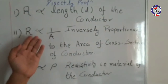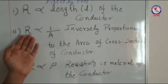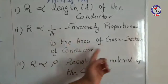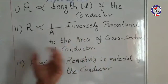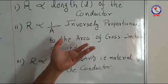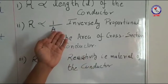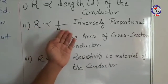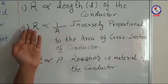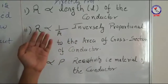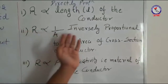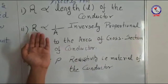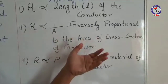Moving on to the second factor: resistance is inversely proportional to the area of cross-section of the conductor. Inversely proportional means that on increasing the area, resistance decreases, while on decreasing the area, resistance increases. So this implies that on varying the cross-section of the particular conductor, the resistance of the conductor can also be varied, but in an inverse manner.